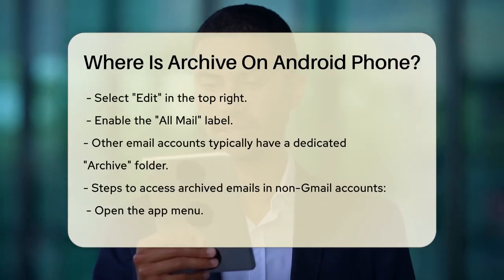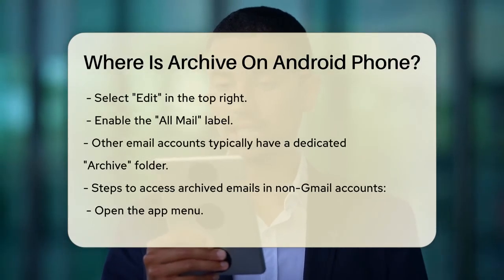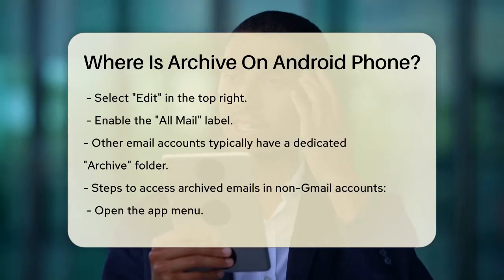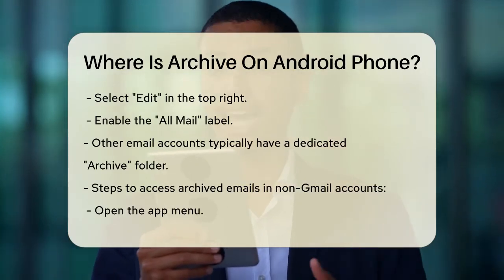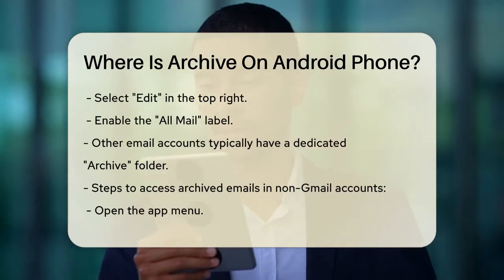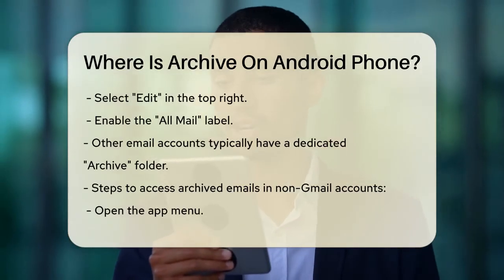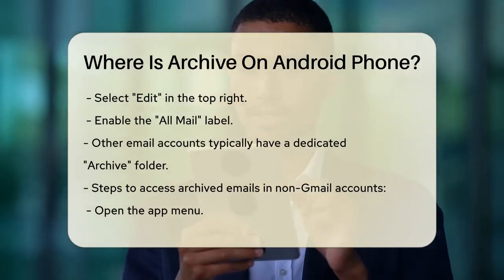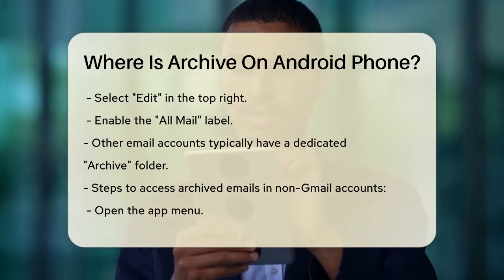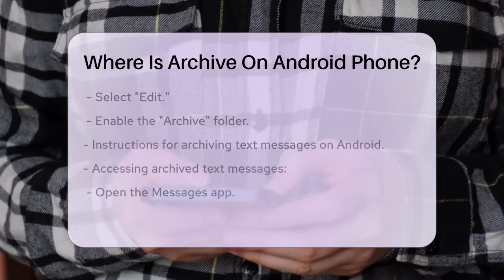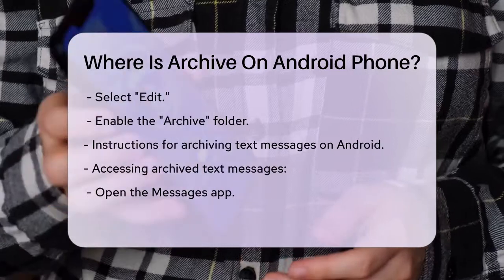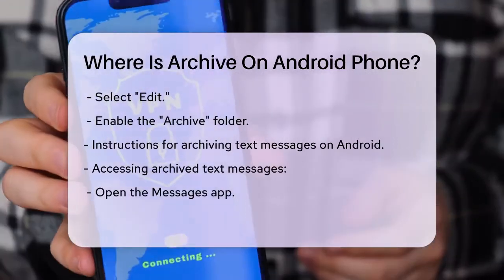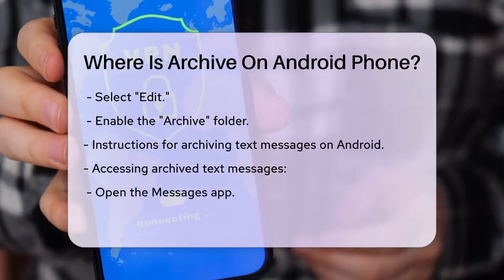For other email accounts, such as those not using Gmail, archived emails typically go into an actual Archive folder. You can access this folder by following similar steps: go to the app menu, select Edit, and then enable the Archive folder for your specific email account.